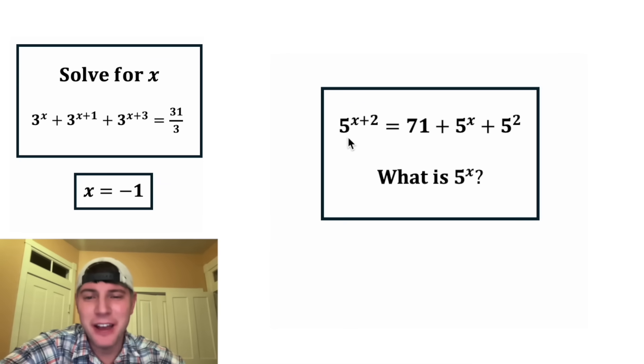And here's tomorrow's problem. Five to the power of x plus two is equal to 71 plus five to the power of x plus five squared. And it wants to know what is five to the power of x. This looks like a fun one.